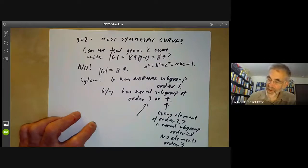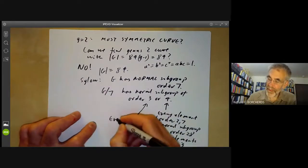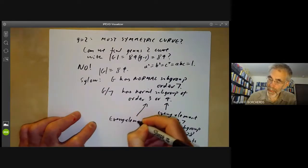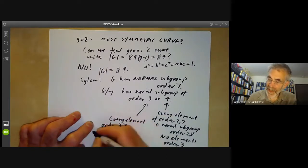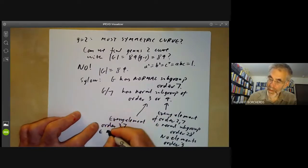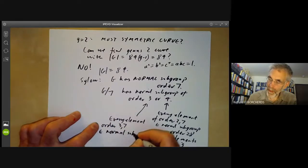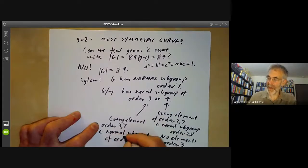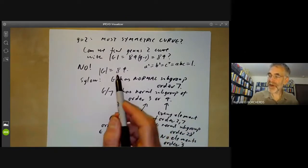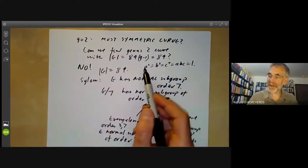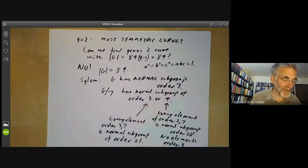This case is kind of similar. Every element of order three or seven is contained in the normal subgroup of order 21. So in either case, a group of order 84 cannot be generated by three elements with these properties, so there are no Hurwitz groups of order 84.